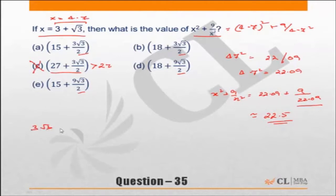3 root 3 by 2 will be 3 into 1.7, 5.1 by 2 which is nothing but 2.5 or say 2.55, or 2.5 is good enough. Approximately 2.5. And how much would be 9 root 3 by 2? 9 root 3 by 2 is nothing but 3 times 3 root 3 by 2. So this is equal to 7.5.